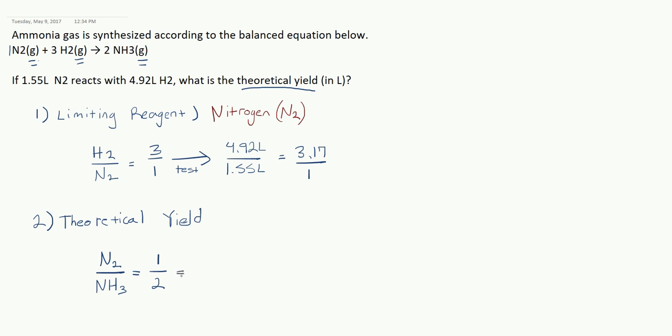But what I actually have is 1.55 liters of nitrogen, which leaves me with how much NH3? Well, we can cross multiply and find out that the NH3, or rather the liters of NH3, is going to be equal to 1.55 times 2, or 3.1 liters.